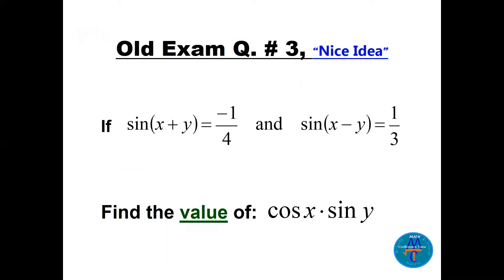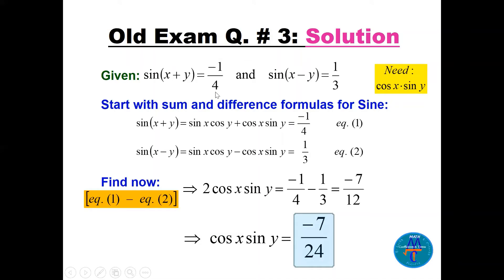Question number three: we're given sin(x + y) = −1/4 and sin(x − y) = 1/3, where x and y are two angles. We need the value of cosine(x)·sine(y), which is a product. The approach is to expand both given expressions using sum and difference formulas for sine.